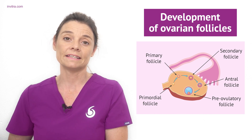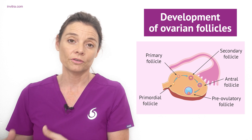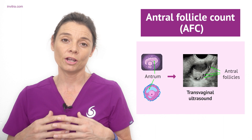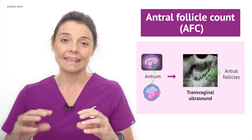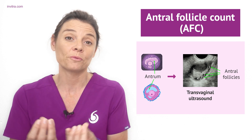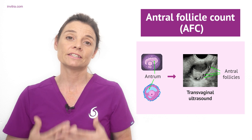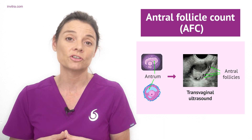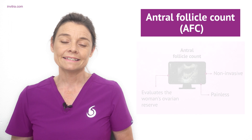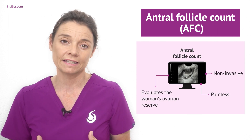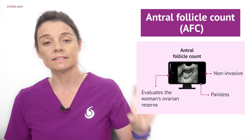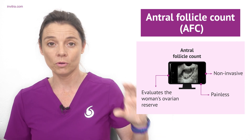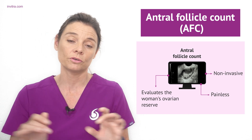This is the antral follicle. After this it becomes the pre-ovulatory follicle or the Graafian follicle, and then ovulation occurs. It's the antral follicle that we are going to talk about now, as this contains something called the antrum. The antrum is like a fluid-filled sac within the follicle which allows the specialist to visualize it in a transvaginal ultrasound. This is a non-invasive and painless ultrasound performed transvaginally whereby the specialist will actually visualize your ovary on their monitor and count the antral follicles that they can see.